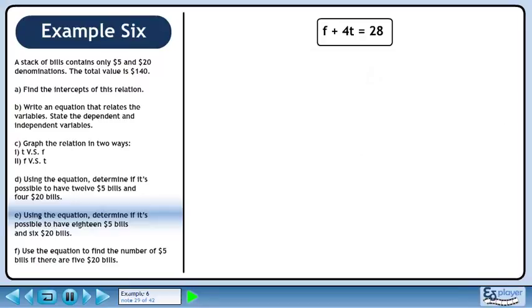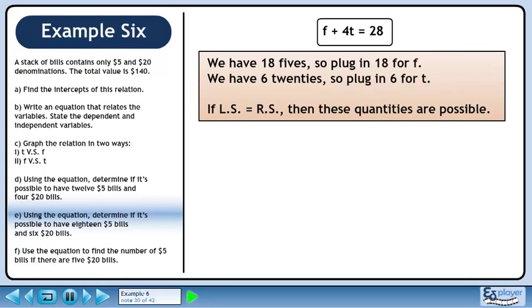In Part E, we'll use the equation to determine if it's possible to have 18 $5 bills and 6 $20 bills. We have 18 5s, so plug in 18 for f. We have 6 20s, so plug in 6 for t. If the left side equals the right side, these quantities are possible.